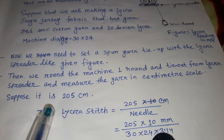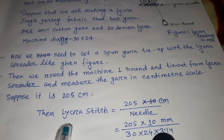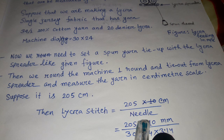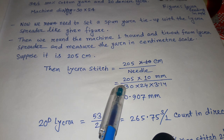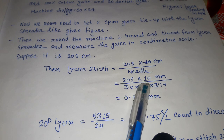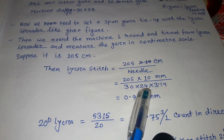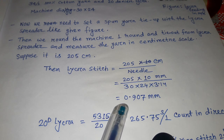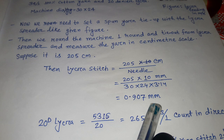Then lycra stitch length equals 205 cm divided by the machine's total needles. We have to calculate the stitch length in millimeters, so 205 centimeters multiplied by 10 gives millimeters, divided by 30 diameter times 24 gauge times 3.14. We get 0.907 millimeters — this is the lycra stitch length.